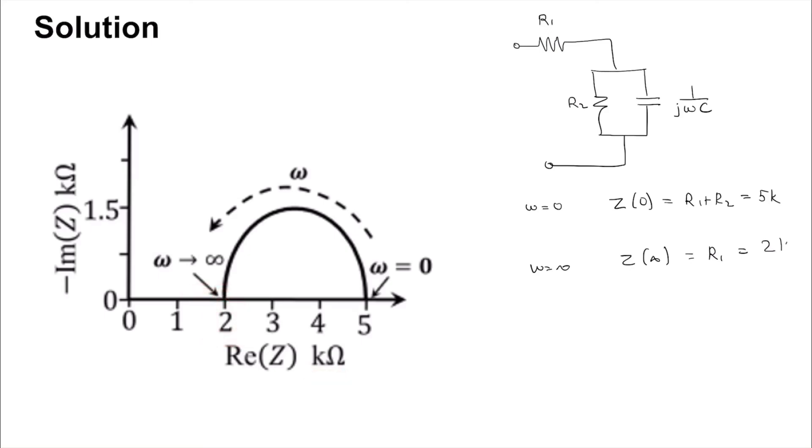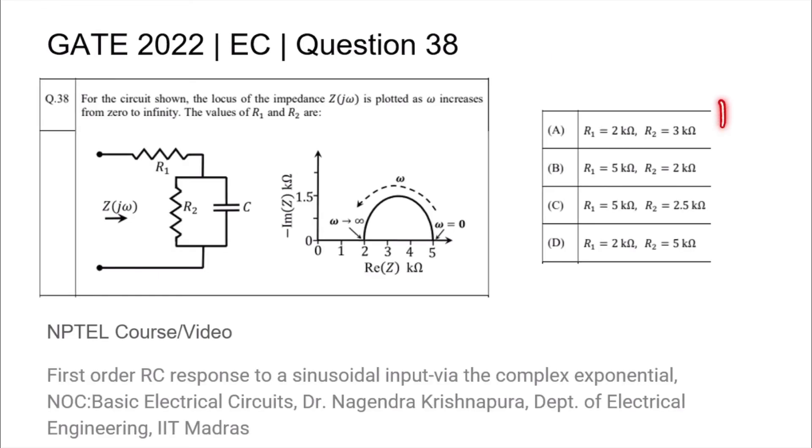This equals 2 kilo ohm, therefore R1 equals 2 kilo ohm, and since R1 plus R2 is 5 kilo ohm, R2 is 3 kilo ohm. Thus the answer is A.